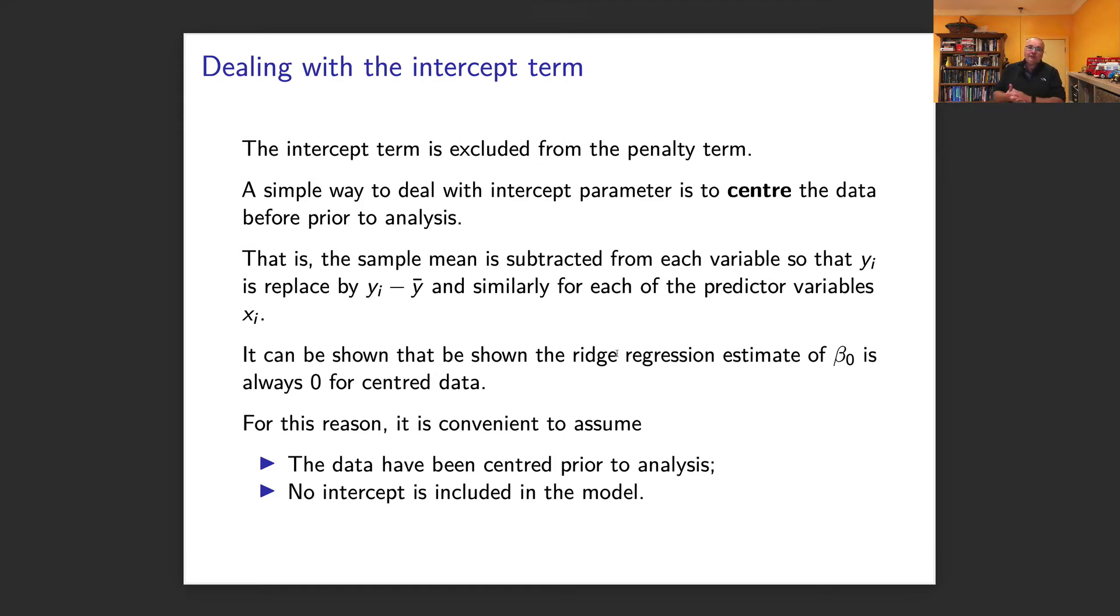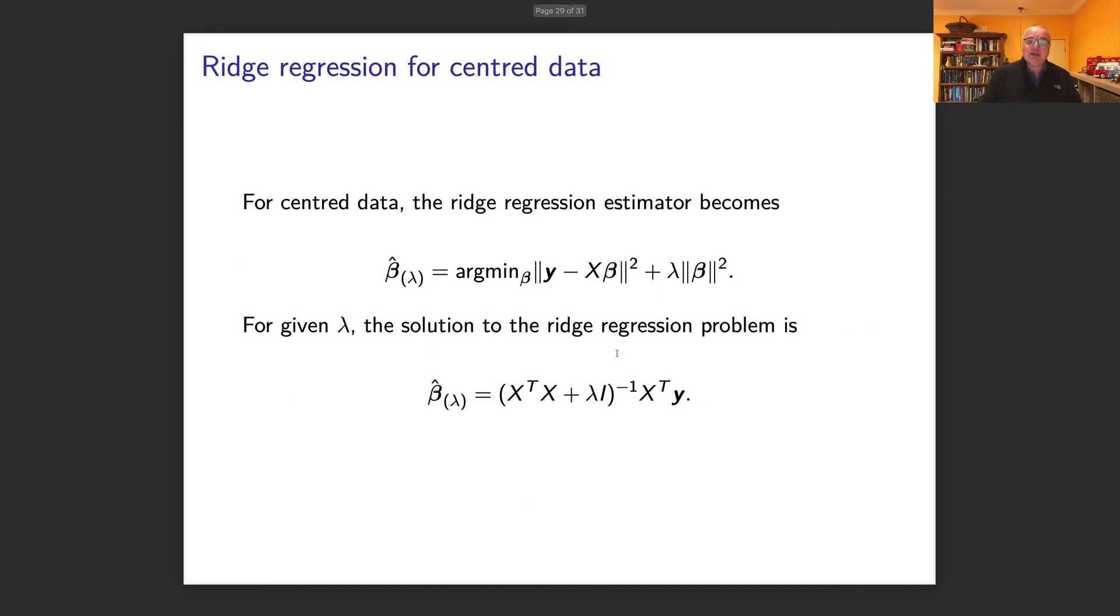What do we do with the intercept term? Because it's not included in the penalty, some people actually center the data before using it. So now instead of having your y, it's your y minus the mean. You can center it by taking off the sample mean, and then you don't have an intercept. In that case, the notation becomes cleaner because now you just got all your parameters together.